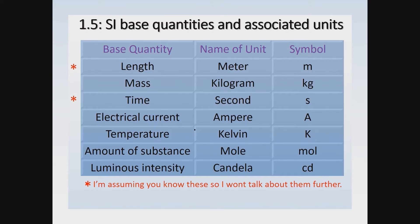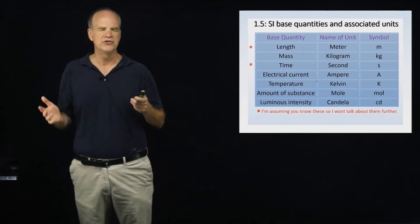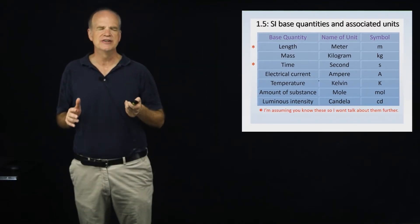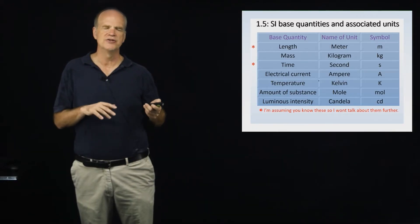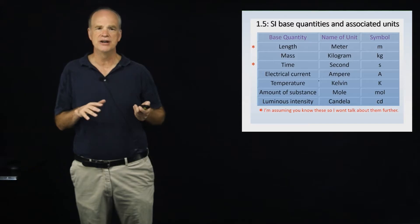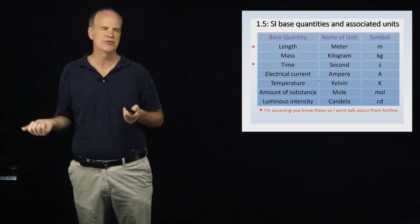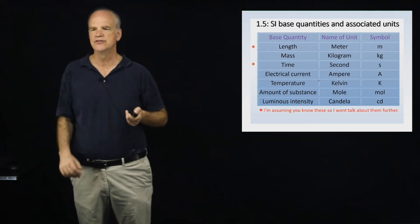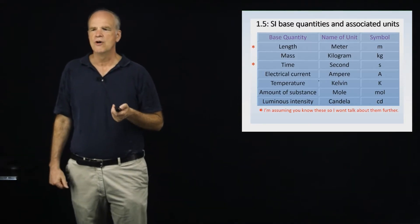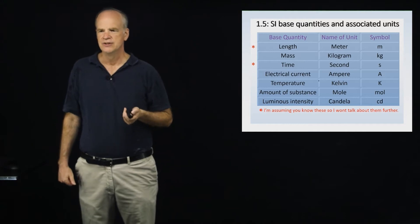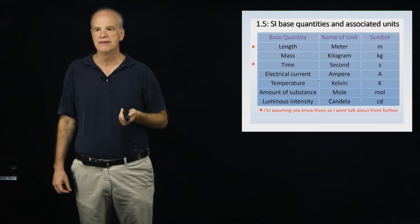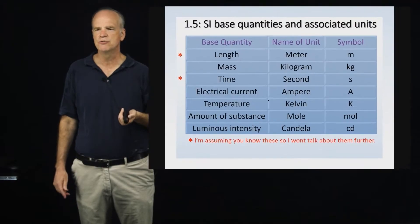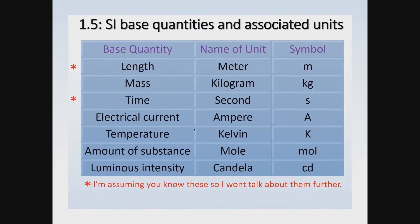You might ask why the base unit of mass was defined as the kilogram. The reason is probably that most everyday objects are measured in kilograms rather than grams, since a gram is a relatively small amount. The base quantity of time is measured in seconds.